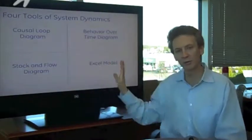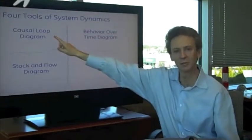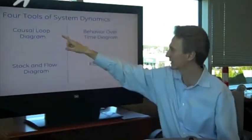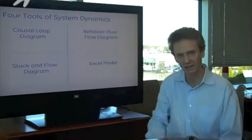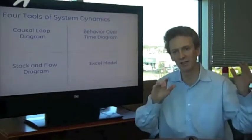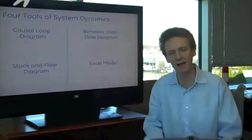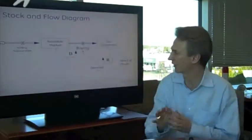If you recall, there are four tools to system dynamics I have on my board over there. The first is the causal loop diagram, which we just saw with the two loops. The second is the behavior over time diagram, so that S-shaped growth curve. The third is the stock and flow diagram, which you need to do before you actually do it in a model. And then there's the actual model. So let's do the stock and flow diagram next.